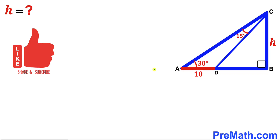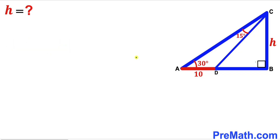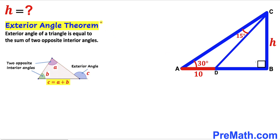Please don't forget to give a thumbs up and subscribe, and keep in mind that this figure may not be 100% true to scale. Let's get started and focus on triangle ACD. We know our angles are 30 degrees and 15 degrees in this triangle, and now let's recall the exterior angle theorem.